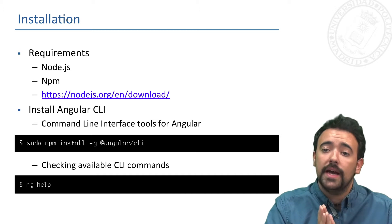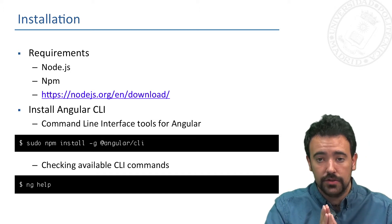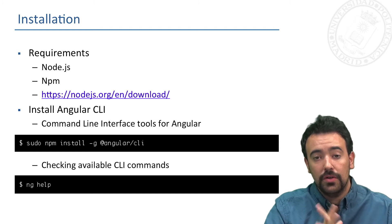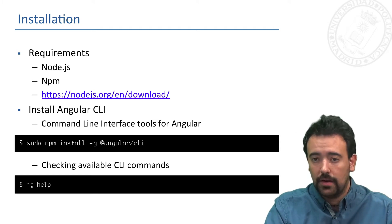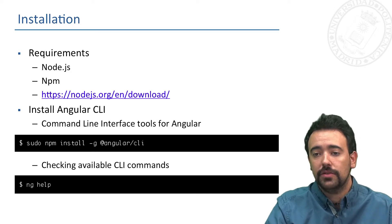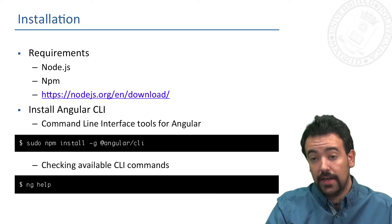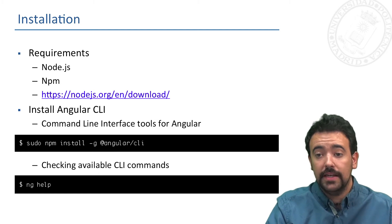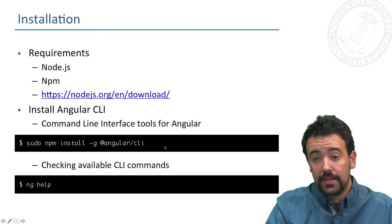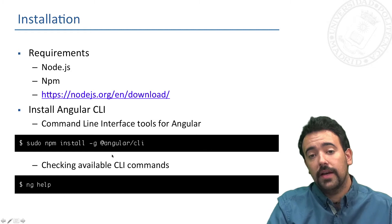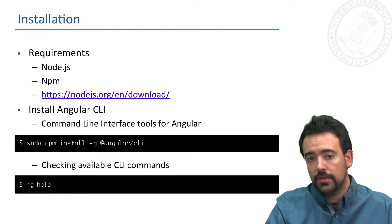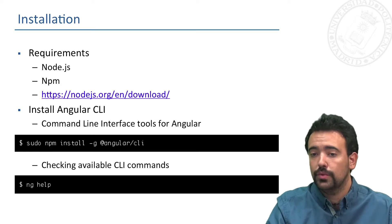When we already have Node.js and NPM installed, we can install Angular using this simple command: npm install Angular CLI. This will install the command line interface tool of Angular that will allow us to start working with it. Using the -g option will globally install it on our computer, and I recommend you to include this.